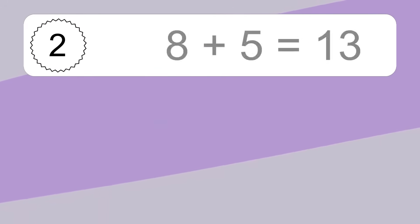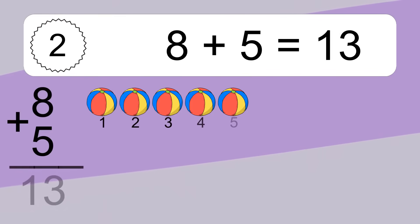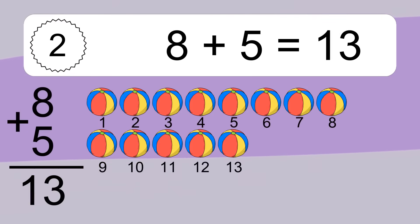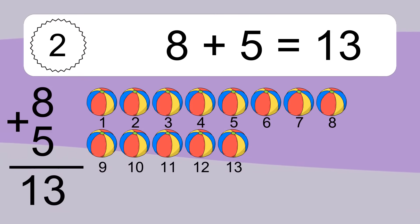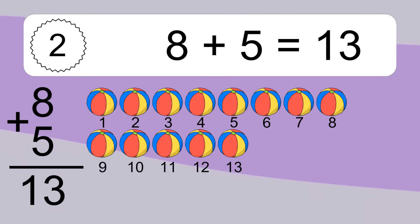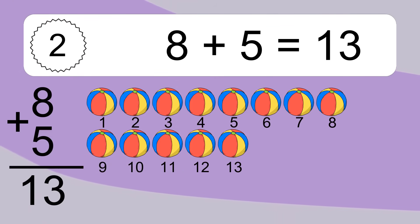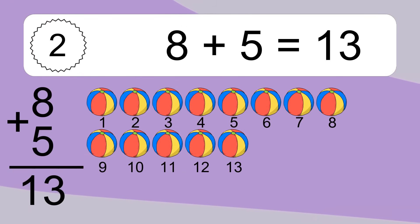8 plus 5 equals what? 8 plus 5 equals 13. Let's count it. 1, 2, 3, 4, 5, 6, 7, 8, 9, 10, 11, 12, 13.